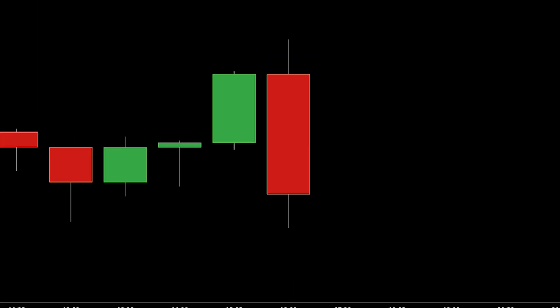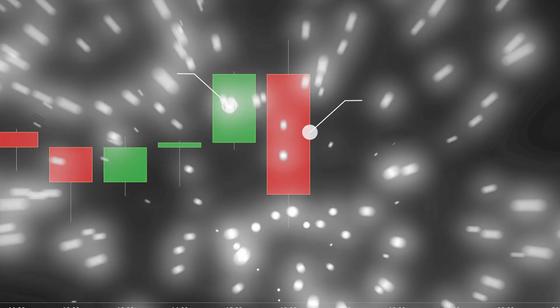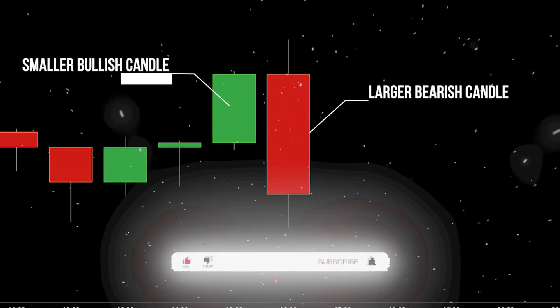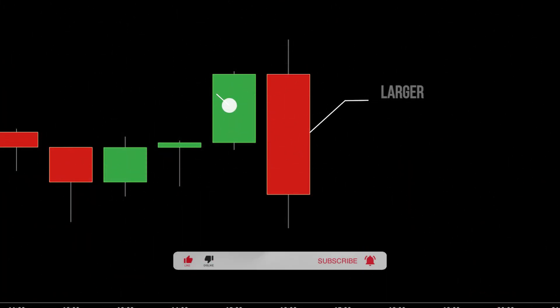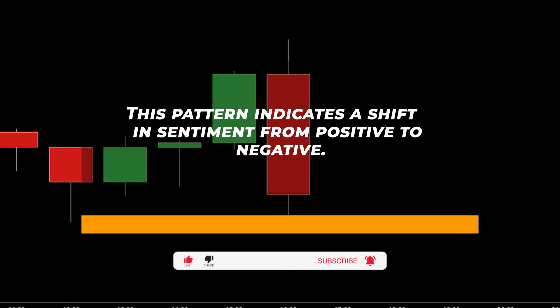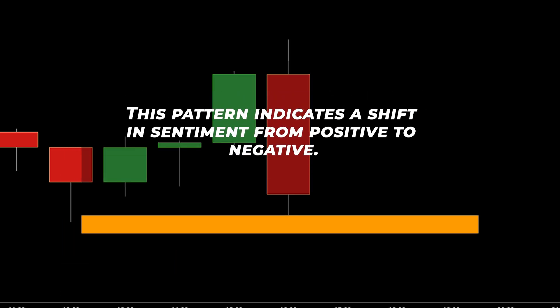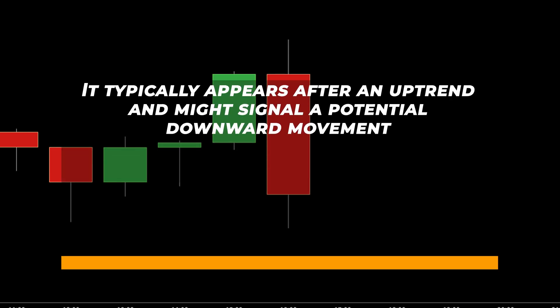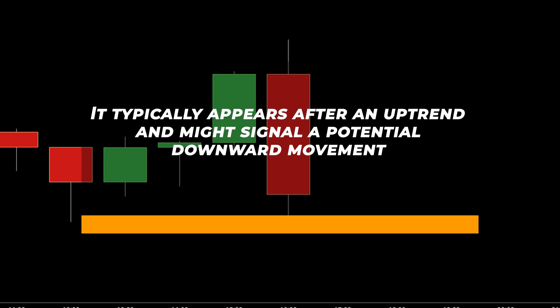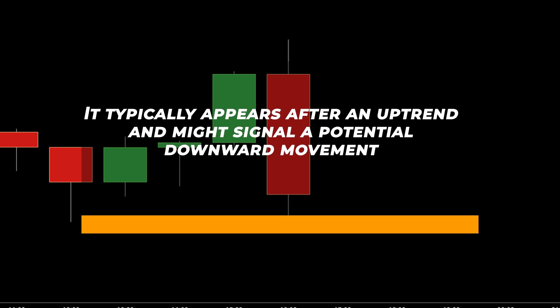The bearish engulfing pattern is another warning sign in the market. It occurs when a larger bearish candle completely engulfs the smaller bullish candle before it. This pattern indicates a shift in sentiment from positive to negative, implying that sellers have gained momentum and overpowered the buyers. It typically appears after an uptrend and might signal a potential downward movement in prices.